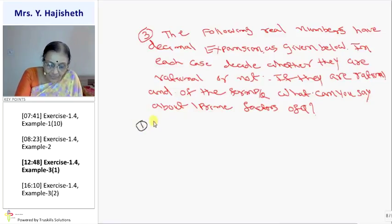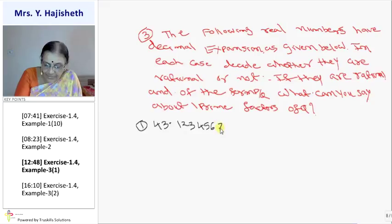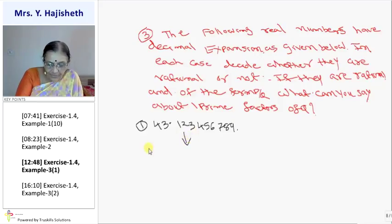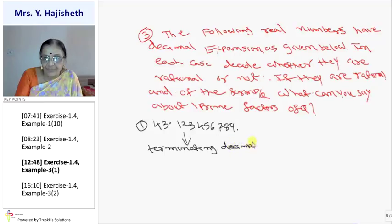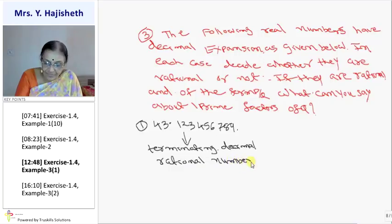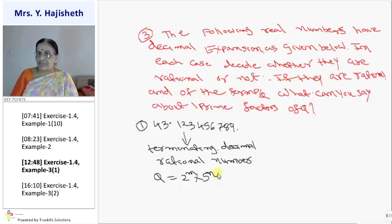First: 43.123456789 with a full stop — we need not continue. This is a terminating decimal because there is an end, no block of digits repeats. When it is a terminating decimal, the rational number P by Q means Q must be of the form 2 raise to m into 5 raise to n — so 2 and 5 are the only factors of Q.